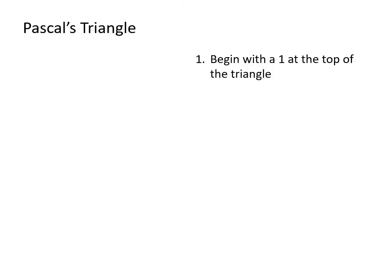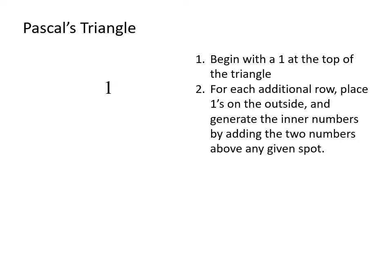We want to be able to create Pascal's triangle. We begin by placing a 1 at the top of the triangle. For each additional row, we place 1s on the outside, and we generate the inner numbers by adding the two numbers that are above that spot. So for our second row, we'll do 1s on the outside — there is no middle spot, so we'll just leave it with those 1s. For the third row, we do 1s on the outside, and to find the middle number, we add the 1 and 1 above to get 2.